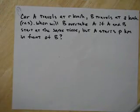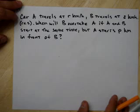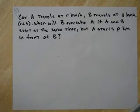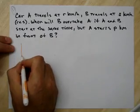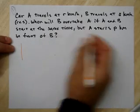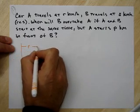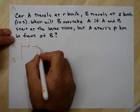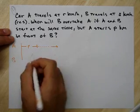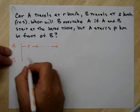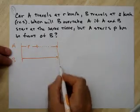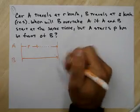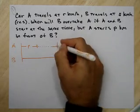We have one more problem here. Car A travels at R kilometers an hour. B travels at S kilometers an hour. When will B overtake A if A and B start at the same time, but A starts P kilometers in front of B? Well, I'm going to draw a little picture just to kind of get an idea of what's going on. We got A starting P, so there's some distance here, P. And that's when A is going to start, and A is going to travel some distance. B is going to go right here, and B is just going to travel B's distance.